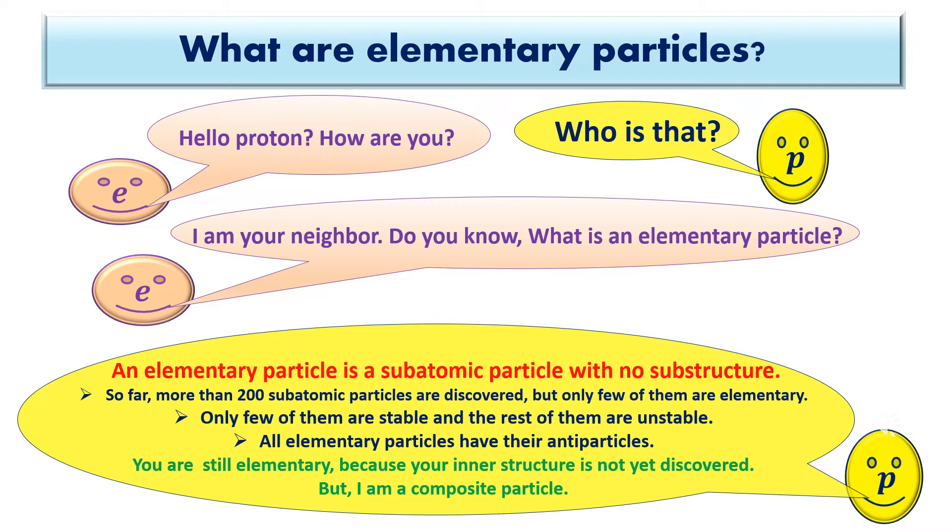An elementary particle is a subatomic particle with no substructure. So far, more than 200 subatomic particles are discovered, but only few of them are elementary. Only few of them are stable and the rest of them are unstable. All elementary particles have their antiparticles. You are still elementary because your inner structure is not yet discovered. But I am a composite particle.